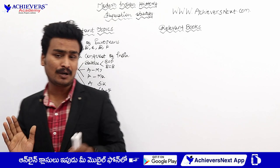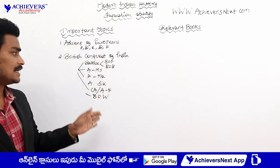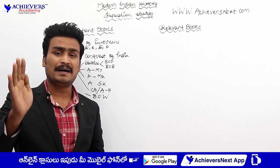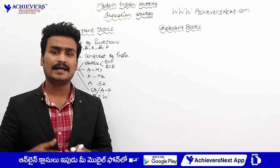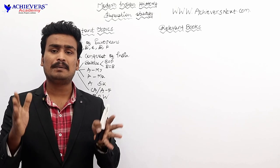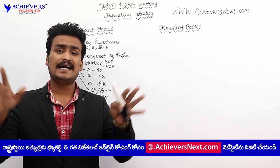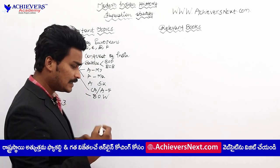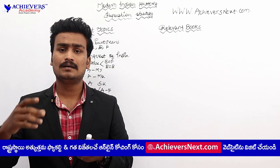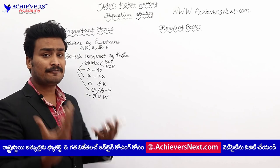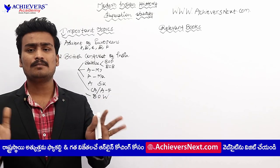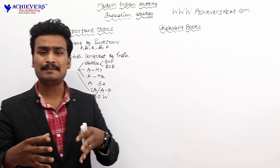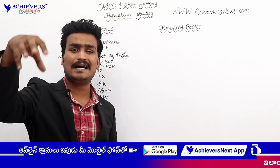For these battles, we need to know: who are the personalities associated with them, and by what treaties they ended. After British Conquest of India, the third important topic is the legislative and judicial reforms of British. The British established their empire in India and then started bringing various reforms in multiple sectors.